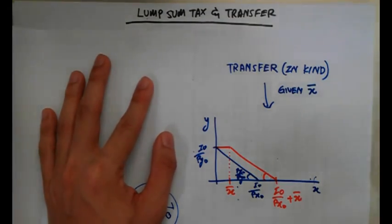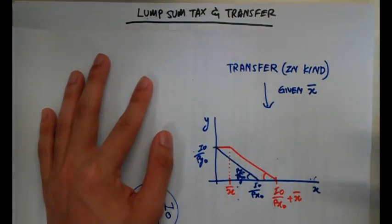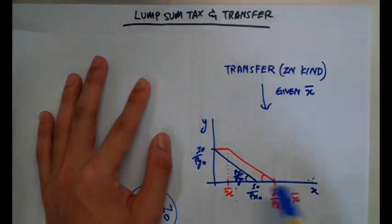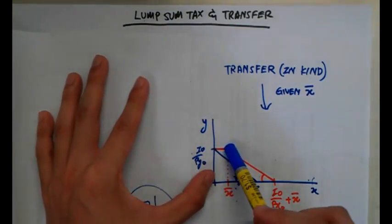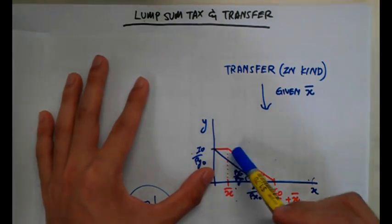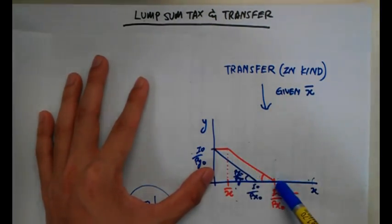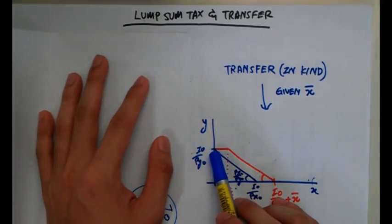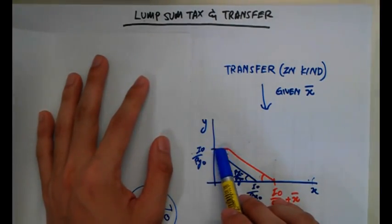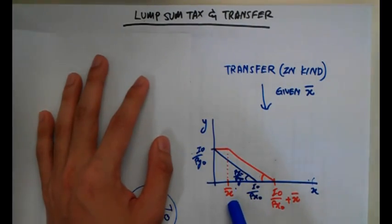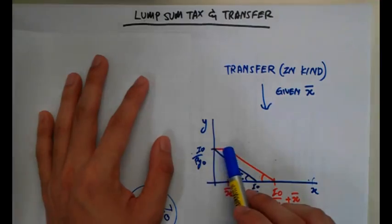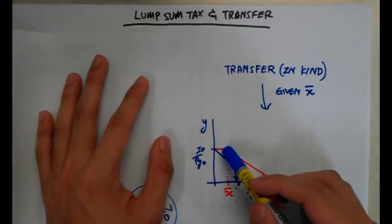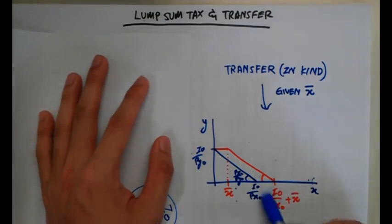A transfer is the government giving you a lump sum not in cash but in kind — for example, a quantity of X given for free. When this happens, the dynamics show a horizontal line denoting the quantity X-bar given to the individual, followed by a parallel line parallel to the original budget constraint. The horizontal segment exists because at that point you can consume the same amount of Y, since you don't pay for the transferred X. The gradient there is zero. The real income notation here is I-naught over PX-naught plus X-bar.